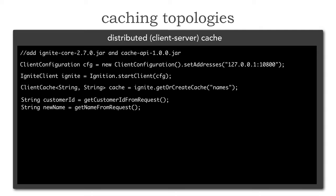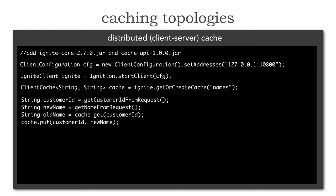I get the new name to do an update. I also want to get the old name to say, 'I see you changed your name from Mark to William, for example.' So I do a cache.get on that customer ID, which gives me the old name, and then I do a cache.put on the customer ID for the new name.